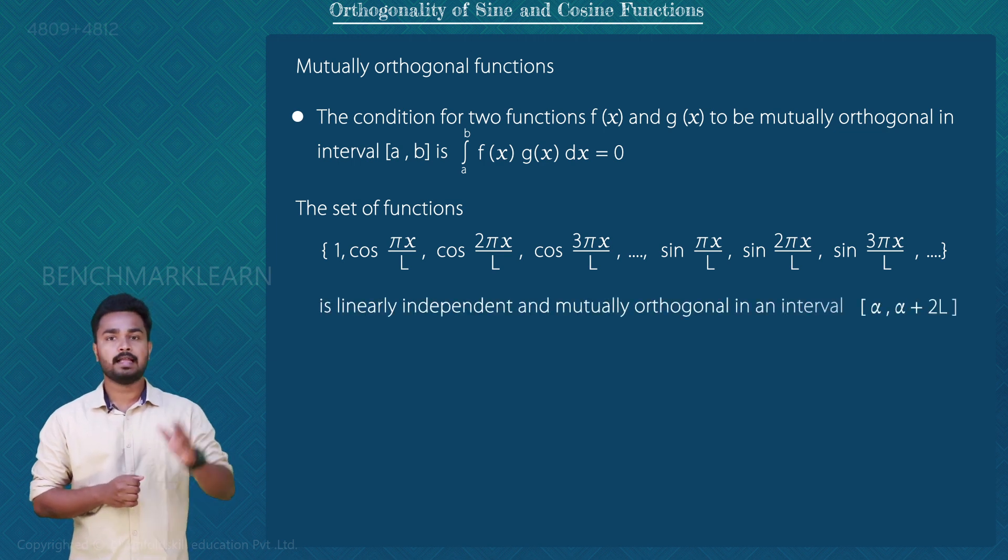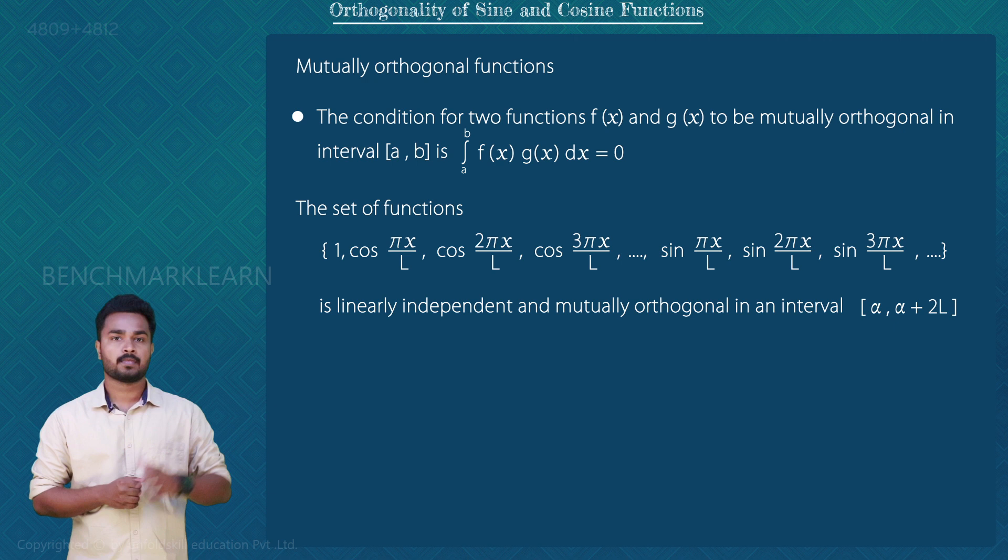Which are linearly independent and mutually orthogonal in closed interval [α, α + 2l]. We use these sine and cosine functions for the Fourier series representation.